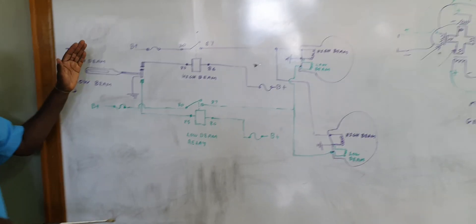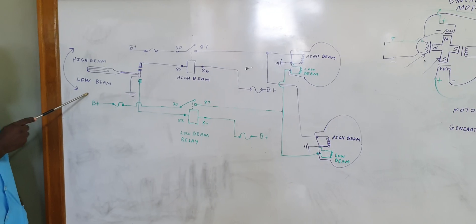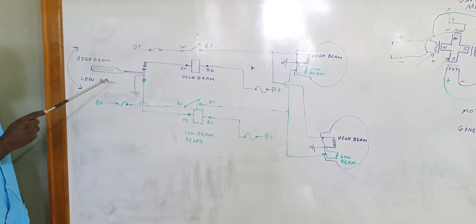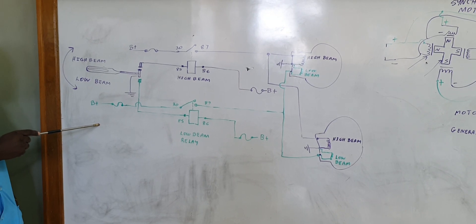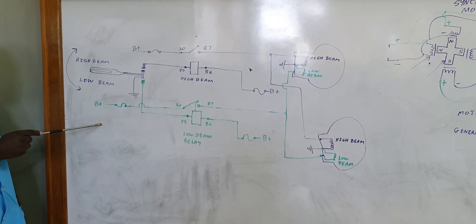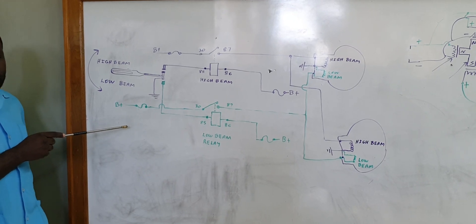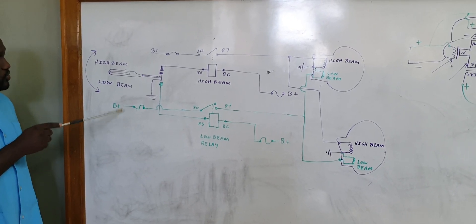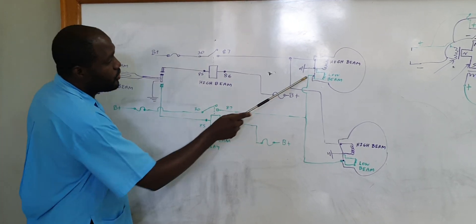The schematic diagram that I have on the board would represent a high beam low beam headlamp circuit. This drawing is not necessarily representative of any particular modern vehicle or system, it is just a general drawing that represents operating principle.